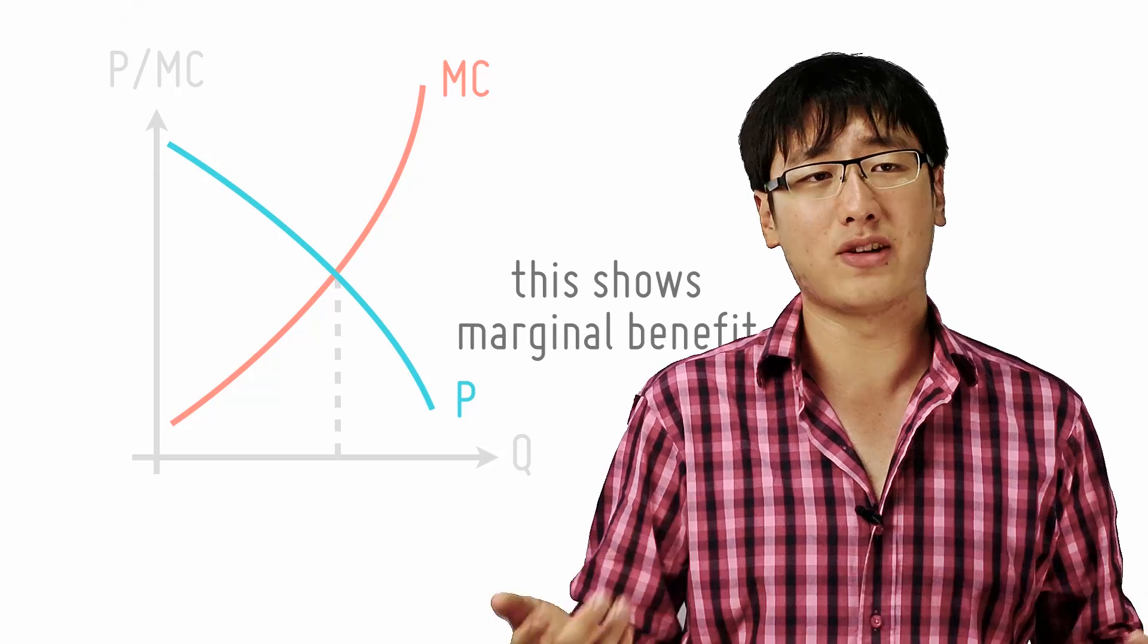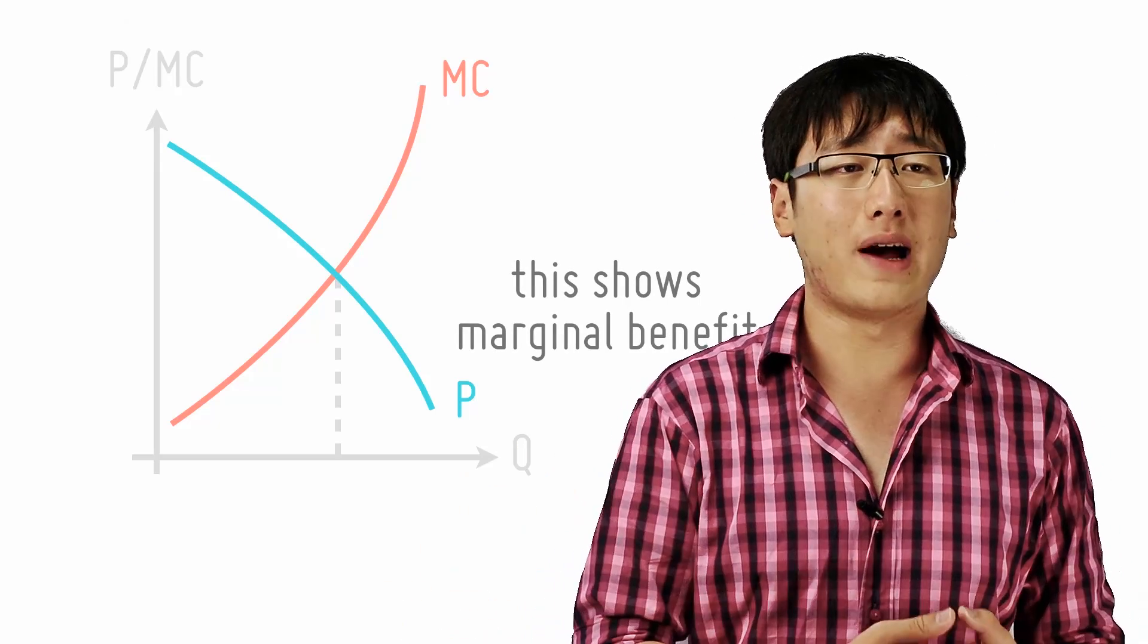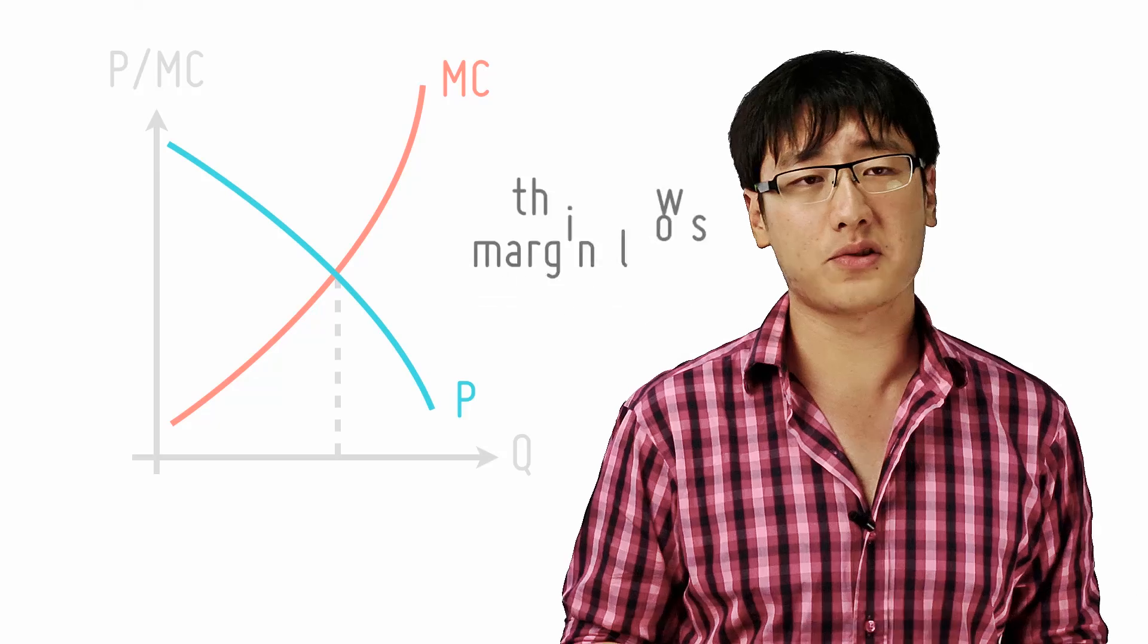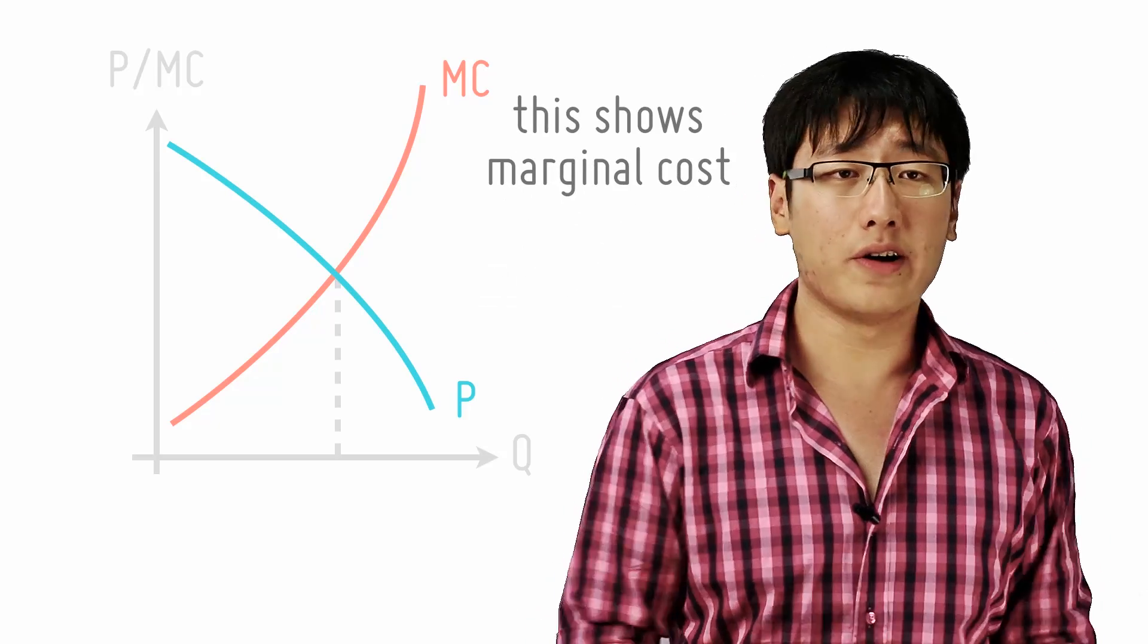The price of a good shows how much consumers value the good. The price shows the marginal benefit. The marginal cost shows the marginal cost of providing the good.